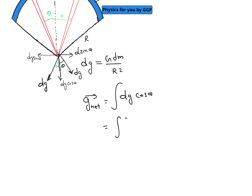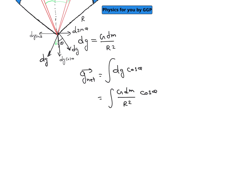We can write the net gravitational field as the integral of (G·dm / r²)·cos θ. To express dm in terms of θ, we use the arc length: if the total angle of the arc is α and radius is r, the total arc length is r·α. The length of the small element is r·dθ, so dm = (m / r·α)·r·dθ = m·dθ / α.